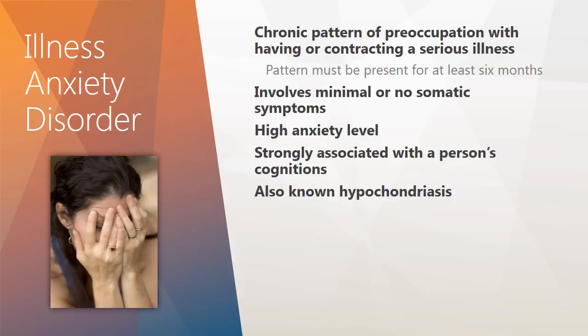Another diagnosis in this category is illness anxiety disorder. It is a chronic pattern of preoccupation with having or contracting a serious illness, and the pattern must be present for at least six months. What makes this different from somatic symptom disorder is it involves minimal or no somatic symptoms. There is a high level of anxiety, and it's strongly associated with a person's cognitions or their thinking patterns. It's also known as hypochondriasis. These individuals are easily alarmed when they hear about someone else getting sick or when they hear about an illness in the news, and their concerns do not respond to reassurance from their doctors.